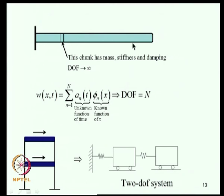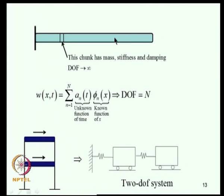If the displacement field of a beam is represented as a series of N terms, written as a sum of time functions Aₙ(t) multiplied by known spatial functions, then the unknowns are A₁, A₂, ..., Aₙ and the degree of freedom is N. Through this approximation, an infinite-DOF system can be approximated as an N-degree-of-freedom system.